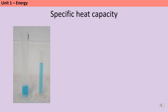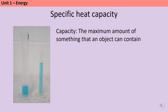Way back in primary school you should have been introduced to the idea of capacity, which is the maximum amount of something that an object could hold. So if I look at these two measuring cylinders here, the one on the left has a much larger capacity — it's capable of holding a much larger volume of liquid. In physics we use the word slightly differently, but you still want to have the idea that capacity is about the maximum amount you can put into something. When we talk about heat capacity, we mean the amount of energy that a substance can absorb to cause it to change temperature.